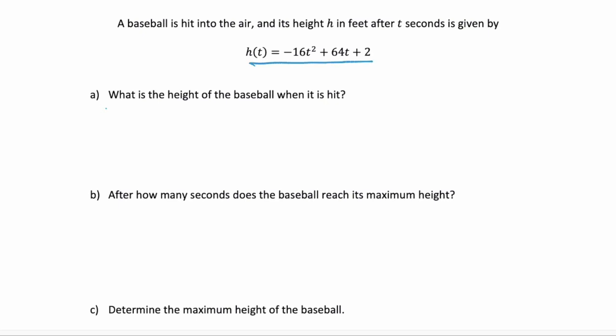Part A asks what is the height of the baseball when it's hit? Well, it wants to know the height at the time that it's hit. The time that the ball is hit is going to be time zero. So we're going to calculate h of zero, the height at time zero. And to do that we substitute in zero wherever there's a t.